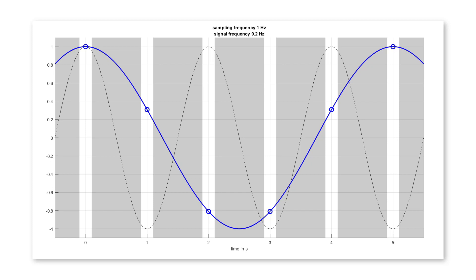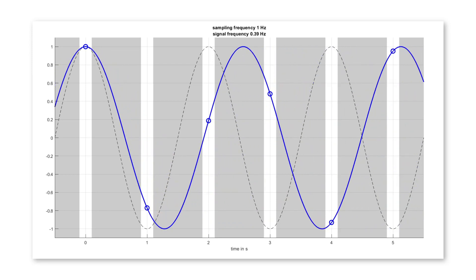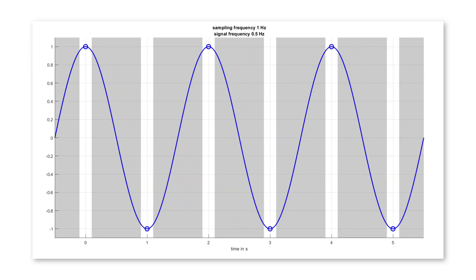Now we can increase the frequency of the signal and see what happens when the signal frequency approaches half the sampling frequency, which is the Nyquist frequency. Becoming faster and faster, this signal now has the highest possible frequency that is reconstructed exactly. You see that we get a maximum at one sampling instant and a minimum at the next sampling instant, and so on.